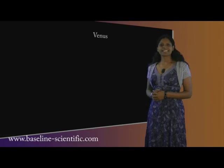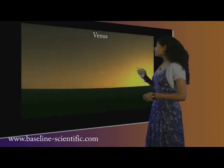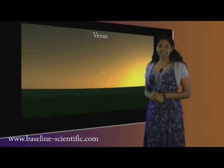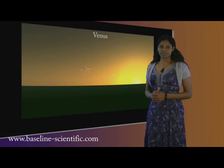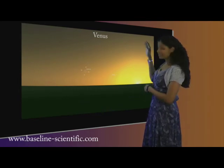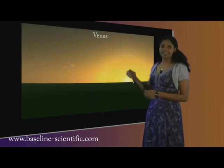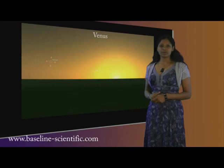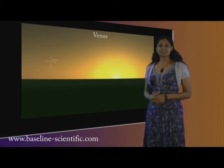Venus is an evening object throughout October. It starts the month low in the sky at sunset and will be difficult to observe. However, it will gradually move higher in the sky and set later in the evening. By the end of the month, it will be a magnitude of minus 3.8 and over 7 degrees above the horizon at sunset.